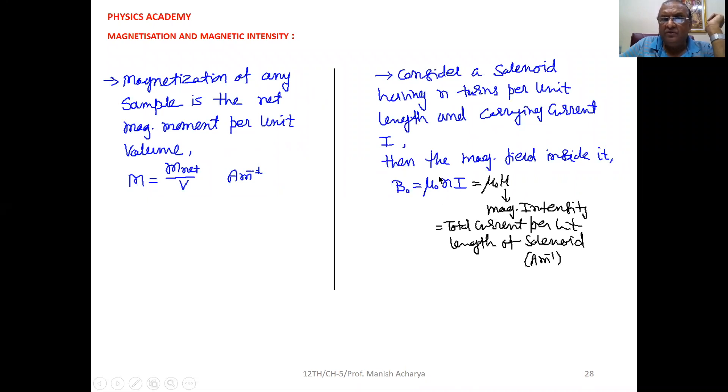Now, Mu0 here appears, that is the permeability of free space, because at present inside the solenoid, the air is there. We can say that is free space. So, the core of the solenoid, that is the free space. So, here we take the permeability of free space.